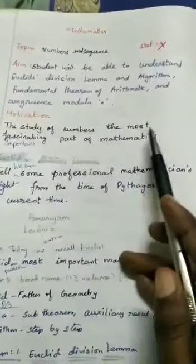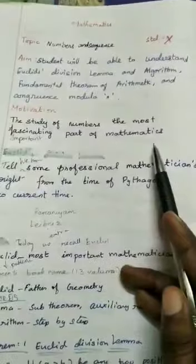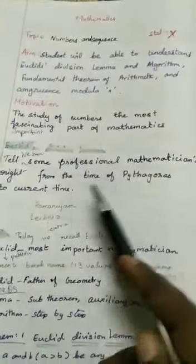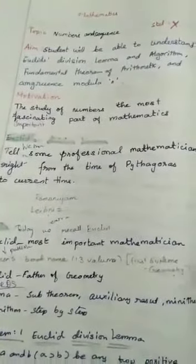The study of numbers is the most important part of mathematics. We know some professional mathematicians right from the time of Pythagoras to current time, Ramanujam, Leibniz, etc.